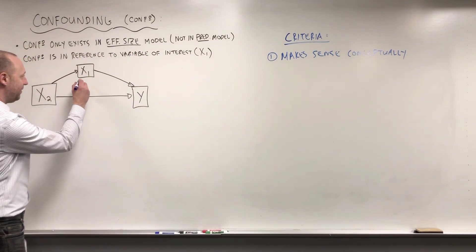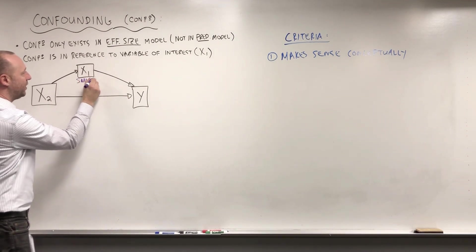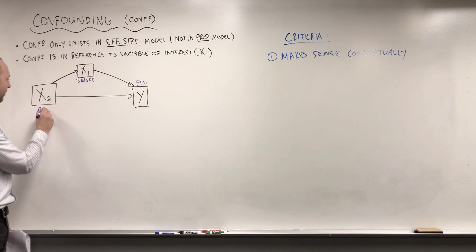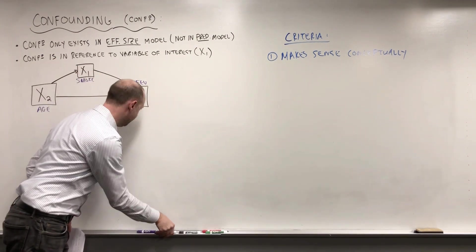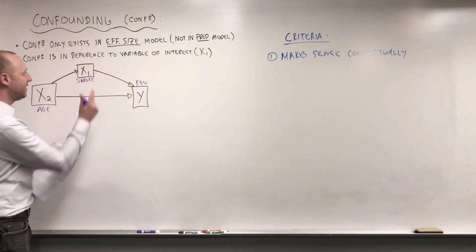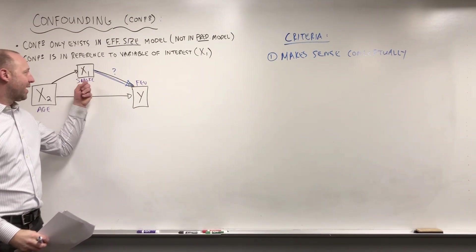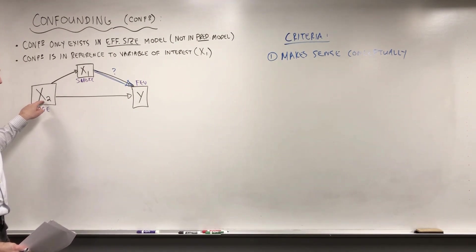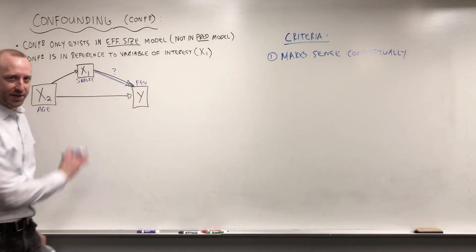The variable we're going to look at, or our question of interest that we're building up to, is looking at the effect of smoking on the lung capacity. And a potential confounder is going to be age. So, first we want to think conceptually, does this diagram make sense? What effect does smoking have on FEV? I'll label that as our question of interest.